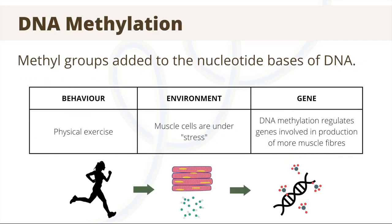Let's talk about DNA methylation. This is the process in which methyl groups are added to the nucleotide bases of DNA, and below on this table there is an example. If you were to do some physical exercise, you expose your muscle cells to a certain level of stress, and this in turn leads to DNA methylation, which regulates genes involved in production of more muscle fibres. This is an example of how a behaviour and an environment can change the way that a gene is expressed.